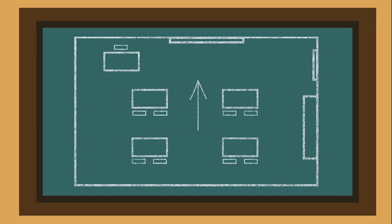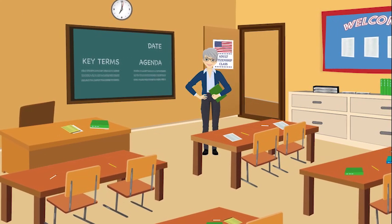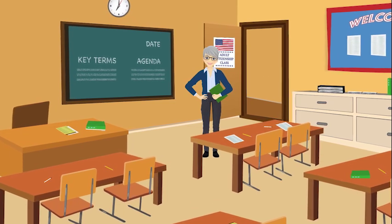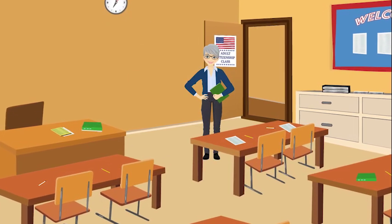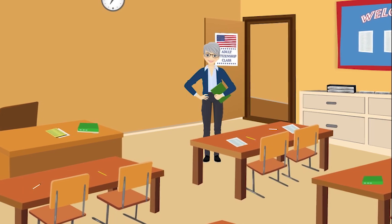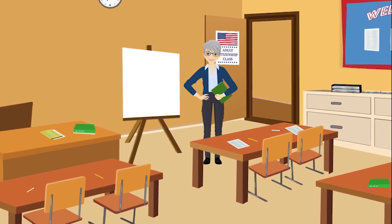Identify the front of the classroom. This is the focal point and the area where you will conduct your lessons each time. In a typical classroom, the front of the room is usually where the chalkboard is located. If a chalkboard or whiteboard is unavailable, place an easel with paper at the front of the room.